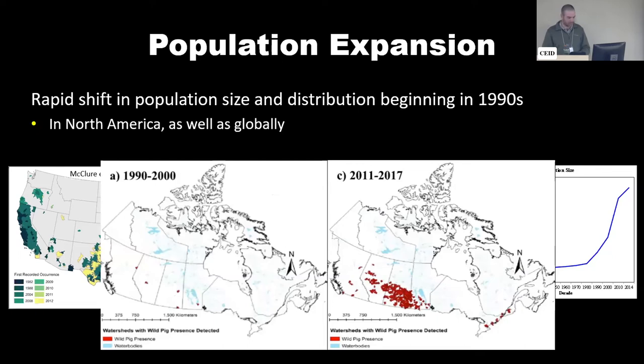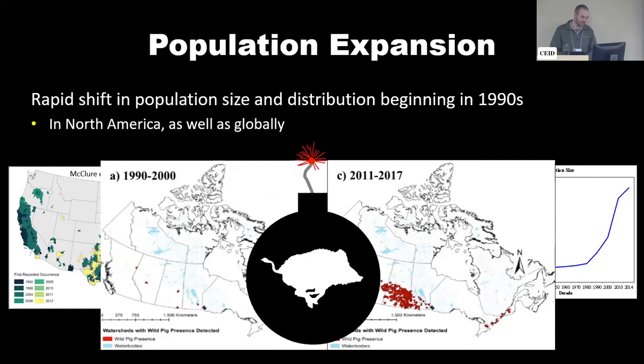Canada is not immune to this either. They saw their own population spike in the 2000s, mainly across the three prairie provinces: Saskatchewan, Alberta, and Manitoba. The result of all this is commonly referred to as a 'pig bomb' that has gone off in recent decades.